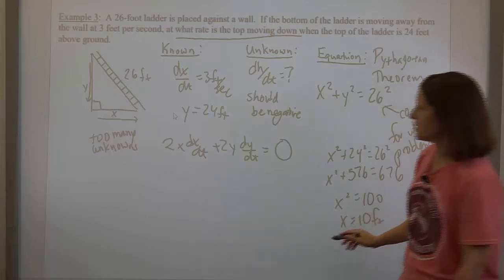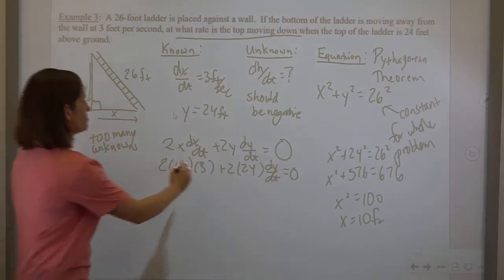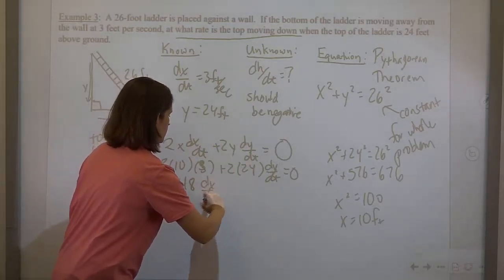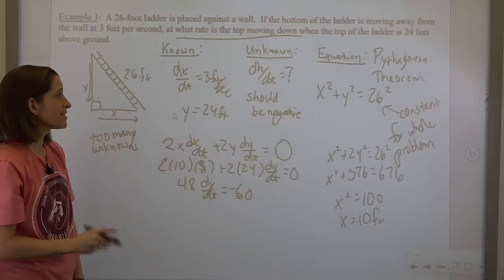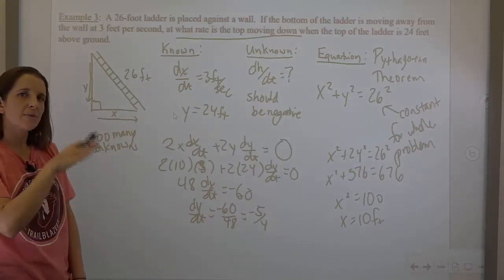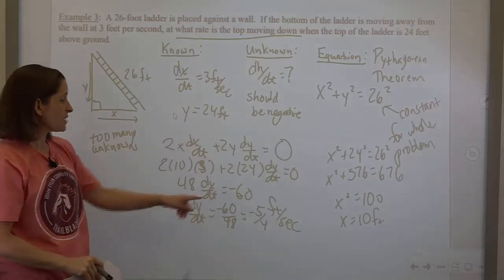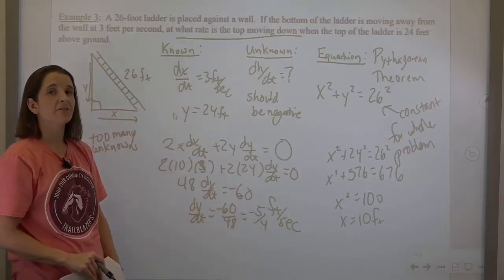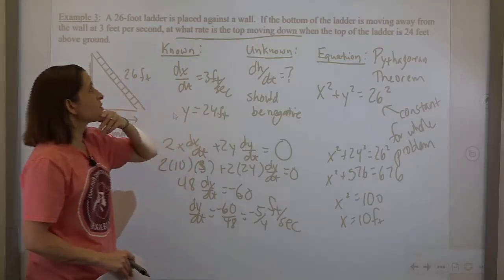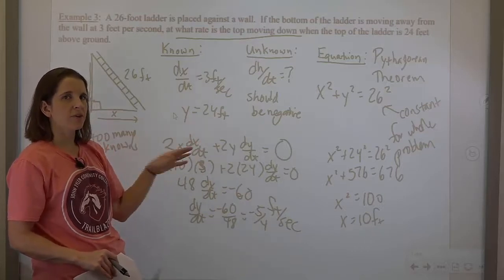Now plugging in: x equals 10, y equals 24, dx/dt equals 3. Moving the 60 to the right makes it negative — which is good because we're expecting a negative answer. We get 48 times dy/dt equals negative 60, so dy/dt equals negative 5/4 feet per second. y was a height in feet, and time was in seconds. We would say either dy/dt equals negative 5/4 feet per second, or that the top of the ladder is moving down at 5/4 feet per second — the word 'down' captures the negative.